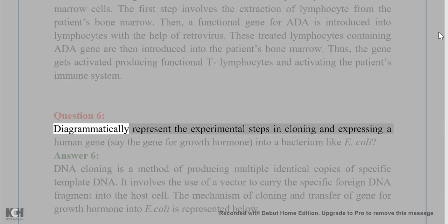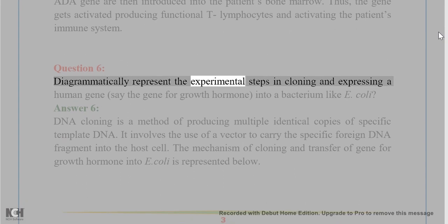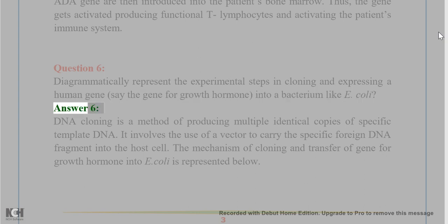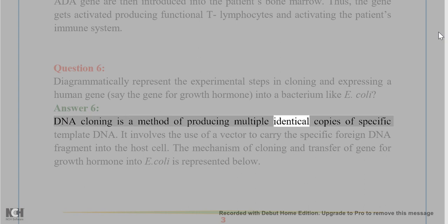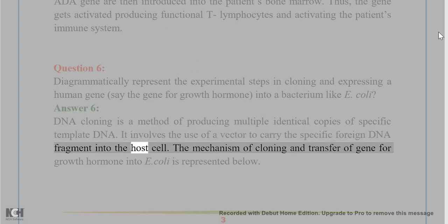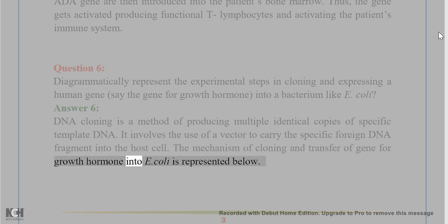Question 6. Diagrammatically represent the experimental steps in cloning and expressing a human gene, say the gene for growth hormone, into a bacterium like E. coli. Answer 6. DNA cloning is a method of producing multiple identical copies of specific template DNA. It involves the use of a vector to carry the specific foreign DNA fragment into the host cell. The mechanism of cloning and transfer of gene for growth hormone into E. coli is represented below.